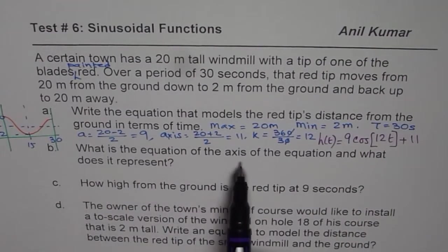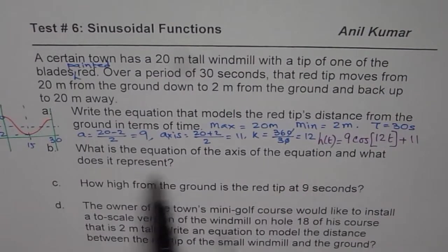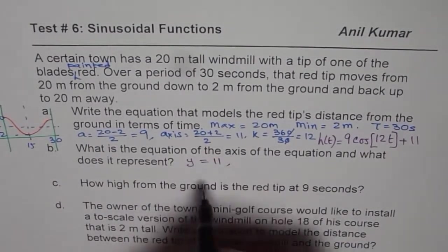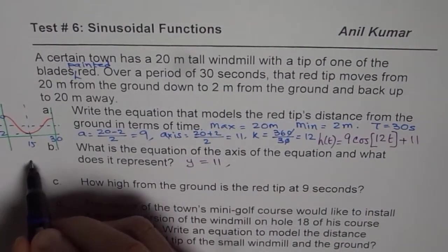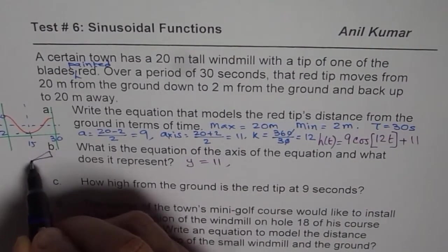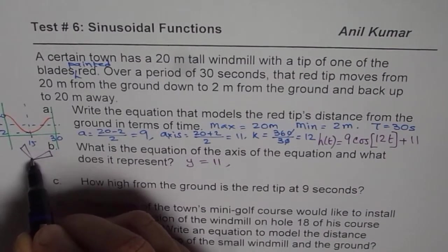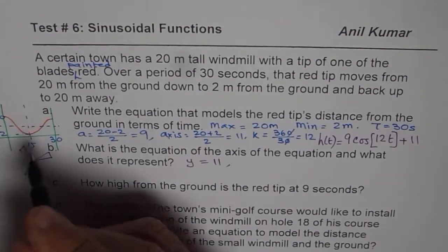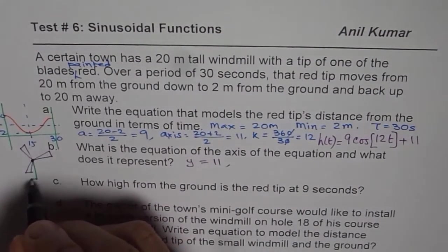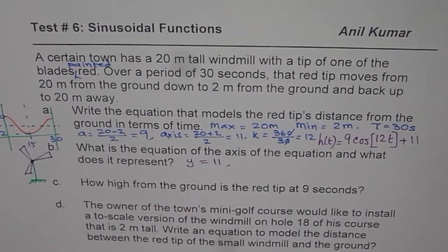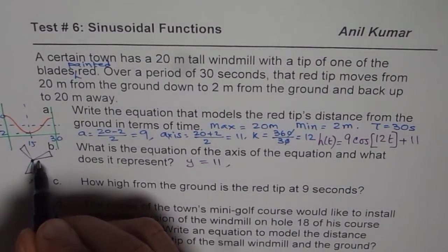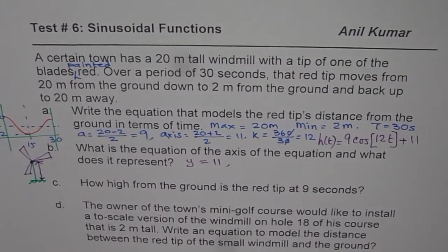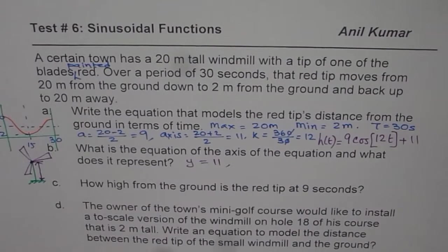What is the equation of the axis and what does it represent? Then, equation of the axis is Y equals to 11. And it represents the center of the windmill. So let us say that is the windmill. So if I kind of sketch it, then it is kind of like this. So axis represents this distance, axis of the windmill above the ground. So that is what it is.